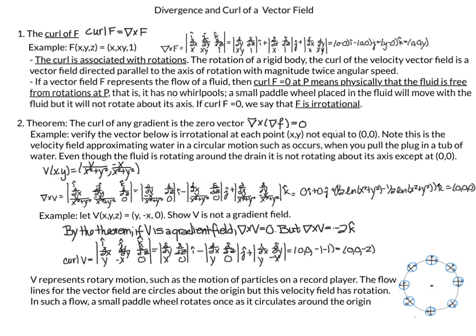Note that this is the velocity field approximating water in a circular motion such as occurs when you pull the plug out of a tub of water. This is an equation we talked about in our previous video on vector fields. Even though the fluid is rotating around the drain, if the curl is equal to 0 except at the origin, then the paddle wheel's orientation will stay up — it won't rotate.